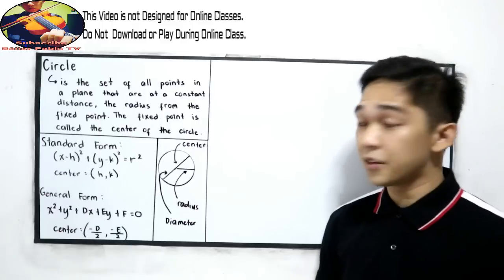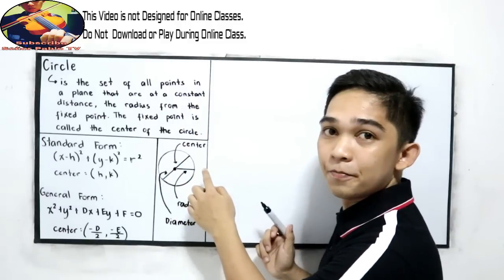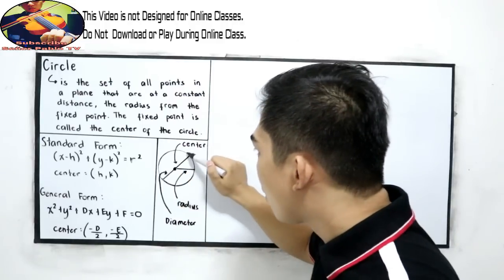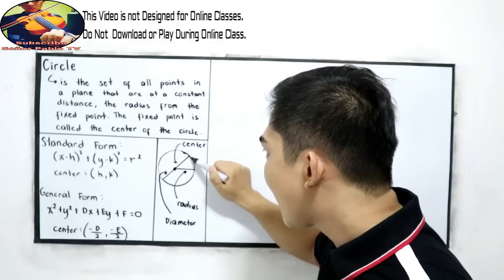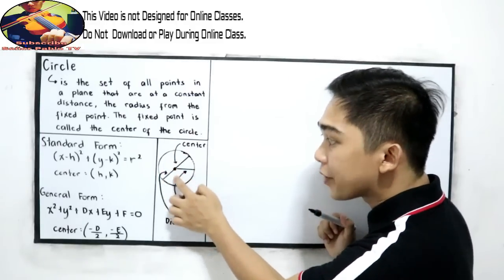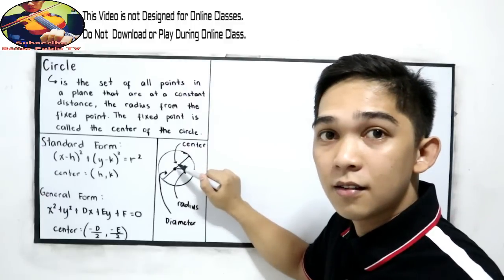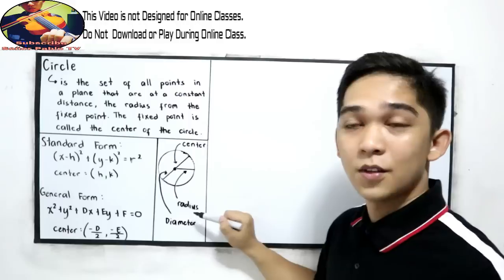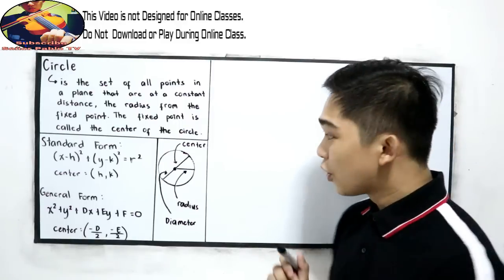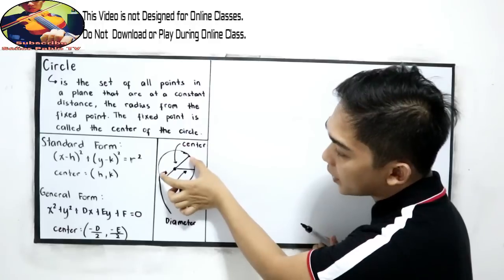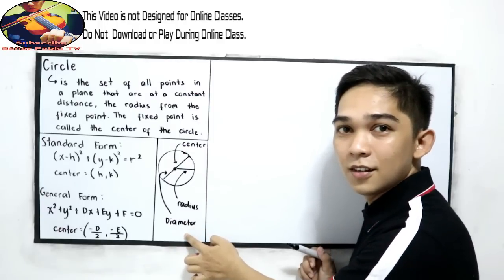Let us illustrate to better understand. We have a circle and a fixed point that is the center. From the center, we have a set of points — infinitely many points — and these points are equidistant from the center. If we connect one point on the circle to the center, that is our radius. If we connect a point to another point passing through the center, that is called the diameter.